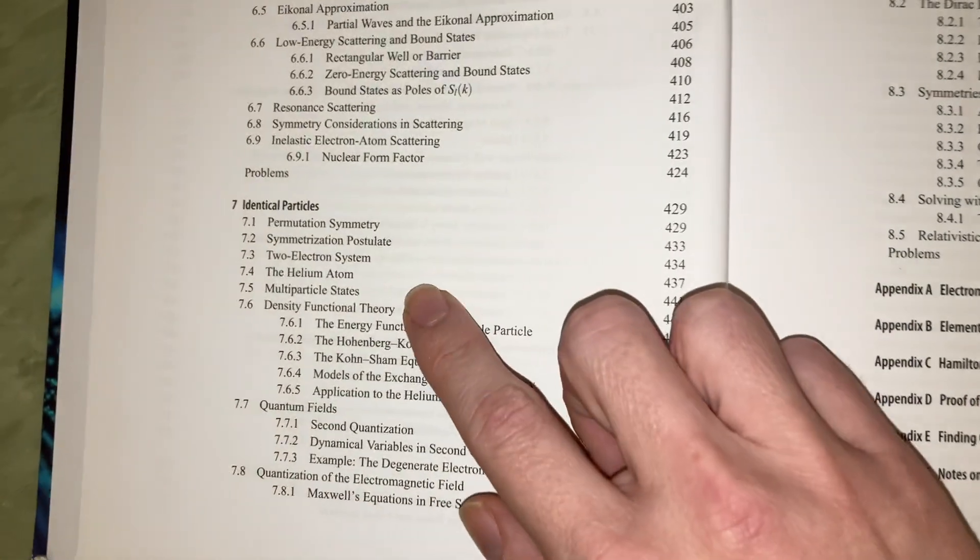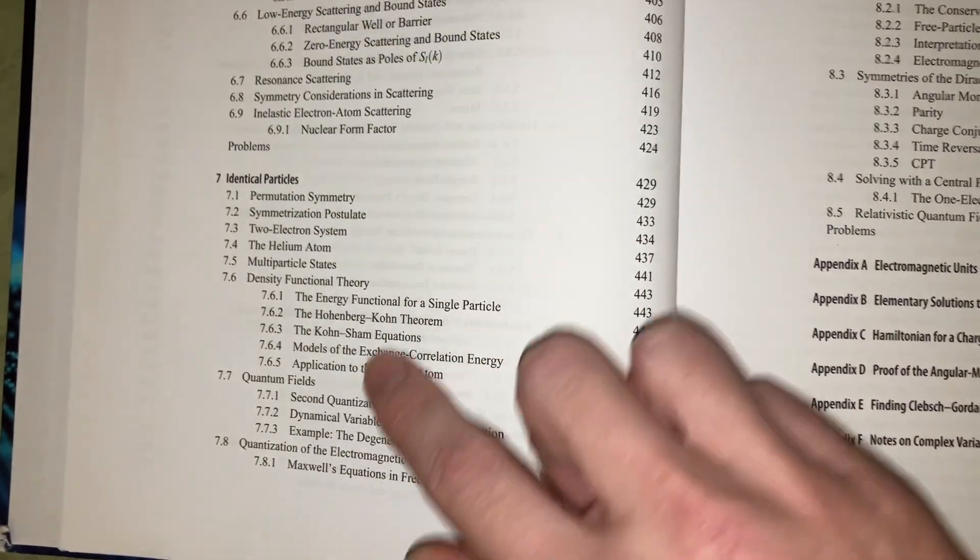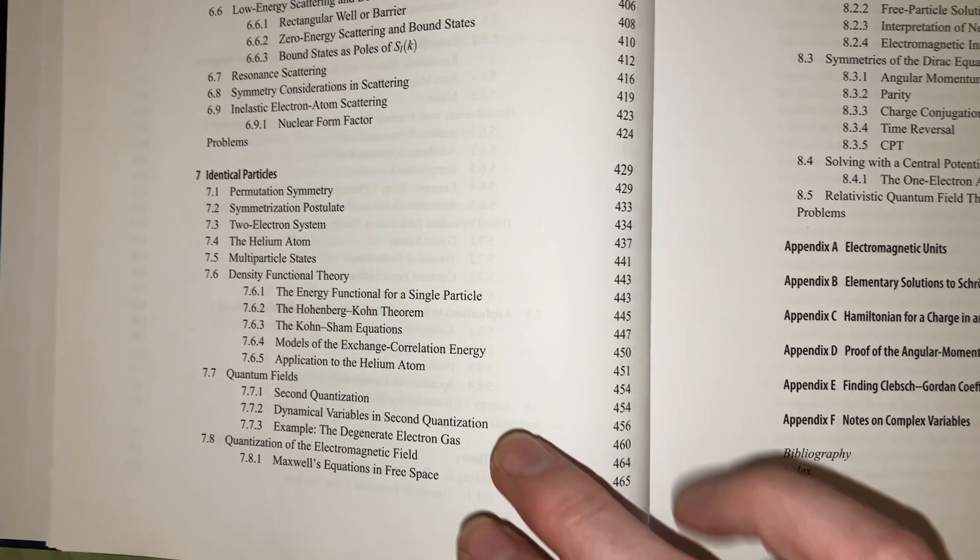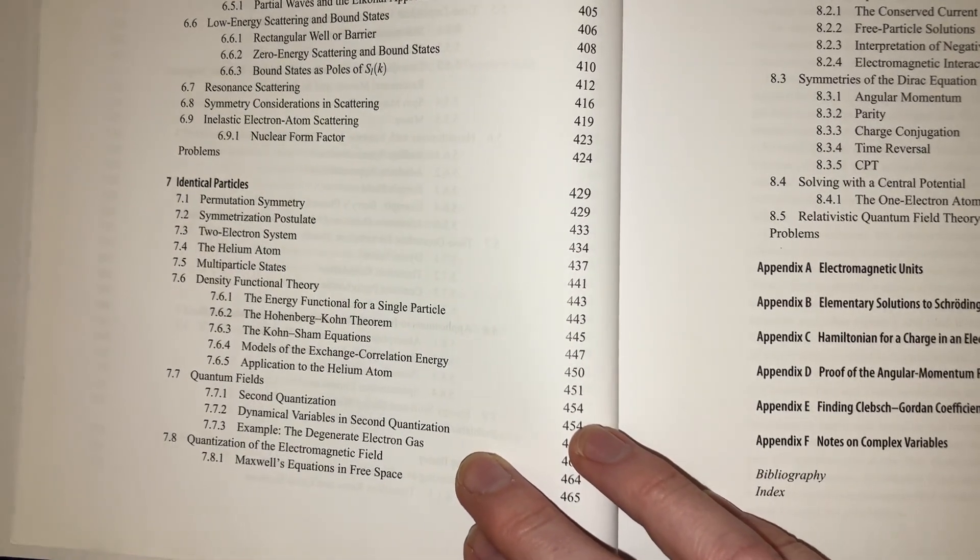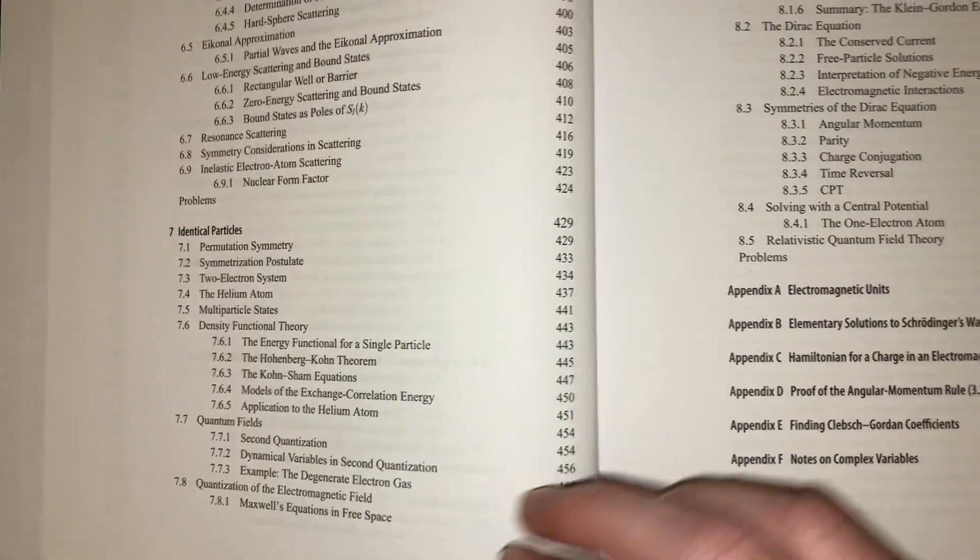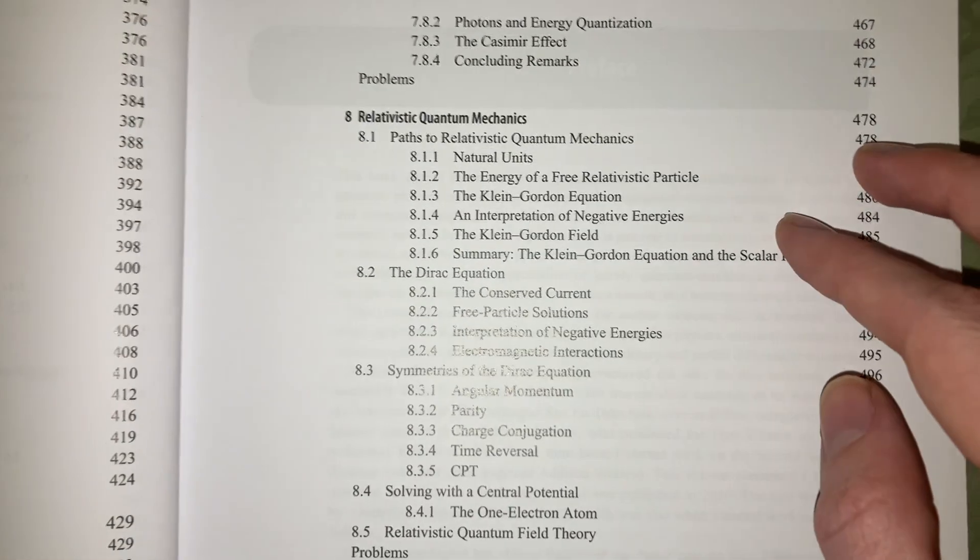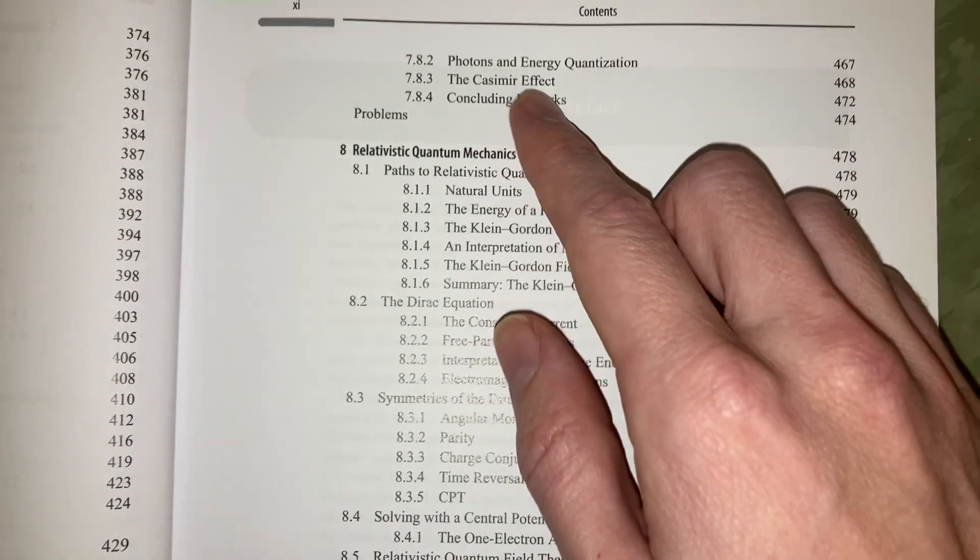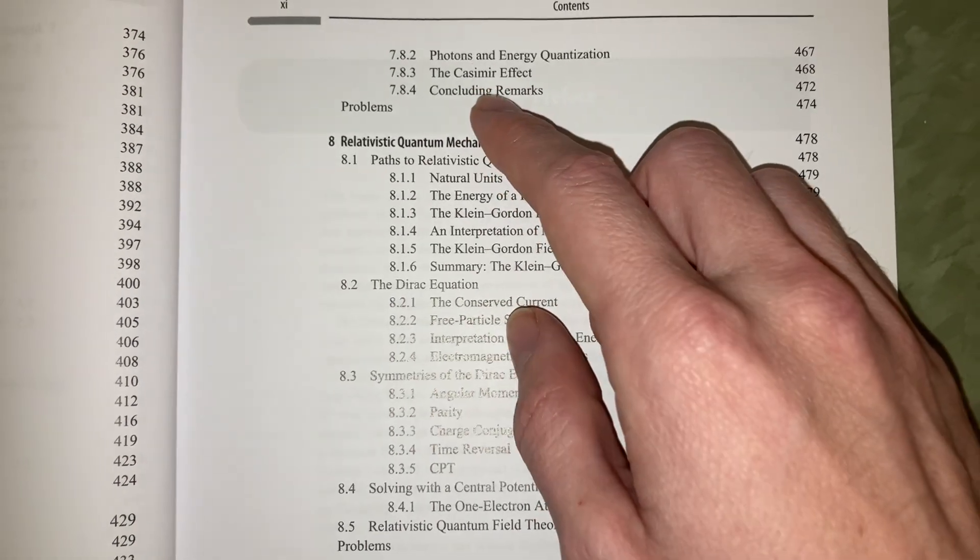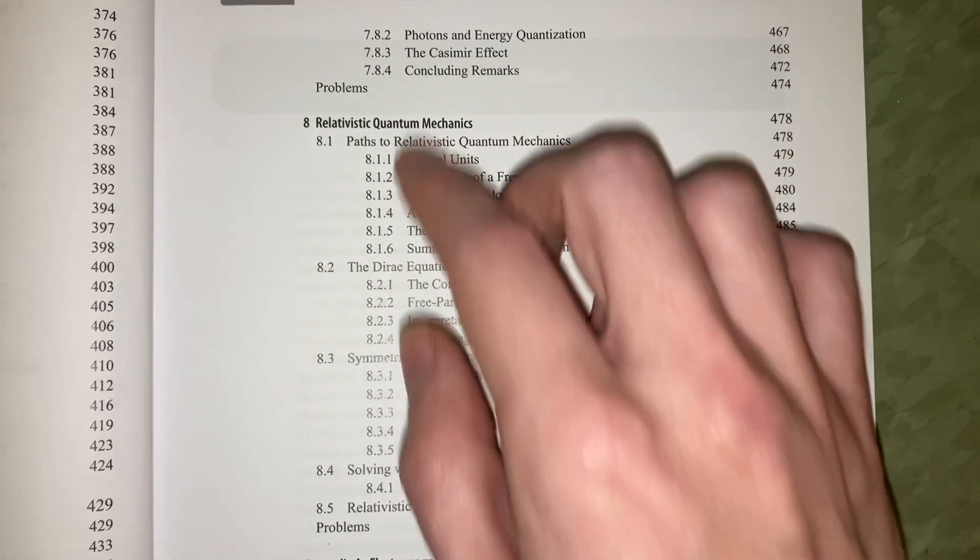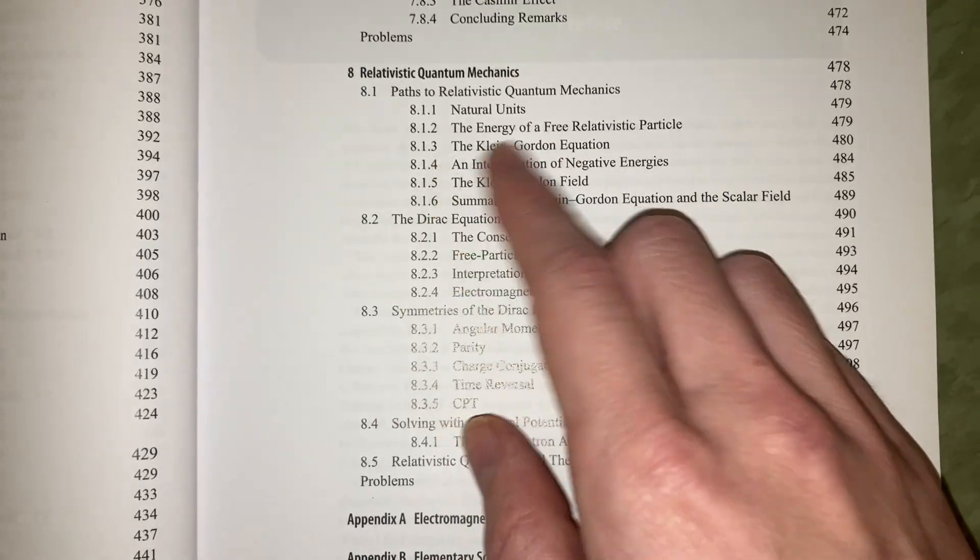Then we have identical particles. Okay, so things that are basically the same. I haven't really gone too much into a lot of these maths here, but we've talked about these concepts, especially the Casimir effect. That's where sort of particles just appear out of thin air in between two really strong electric plates and stuff. So it's kind of interesting.